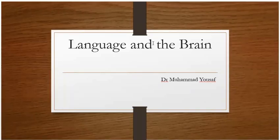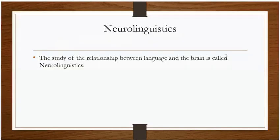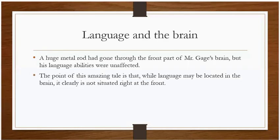Language and brain is the next chapter. First of all, we start with neurolinguistics — the study of the relationship between language and the brain.